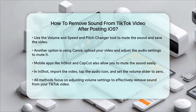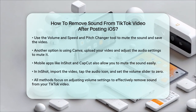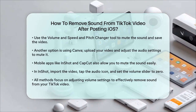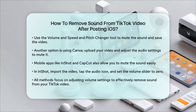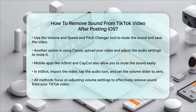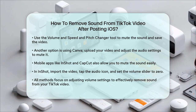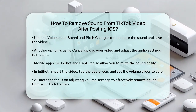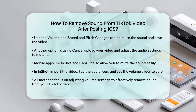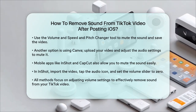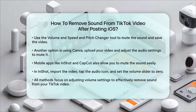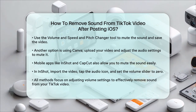If you prefer using a mobile app, you can try InShot or CapCut. These apps allow you to import your video, adjust the audio settings, and mute the sound. For example, in InShot, you can import your video, tap on the audio icon, and adjust the volume slider to zero. In all these methods, the key is to adjust the volume settings to mute the original sound.